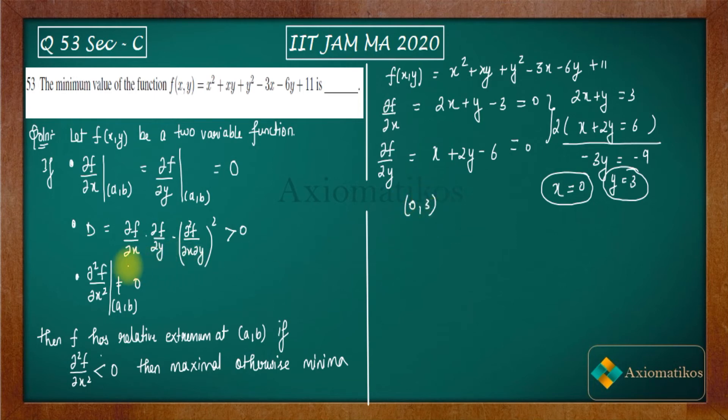So now let us calculate the remaining thing ∂²f/∂x∂y. So ∂²f/∂x∂y actually means that you have to differentiate ∂f/∂y with respect to x. So if you will do that what you will get is 1, I am differentiating this with respect to x, so you will get just 1.